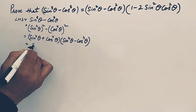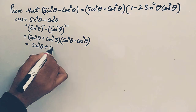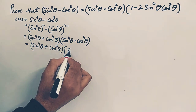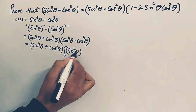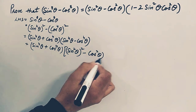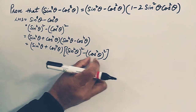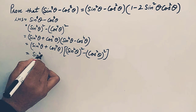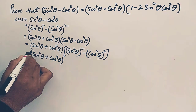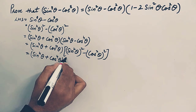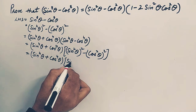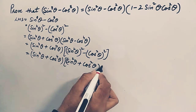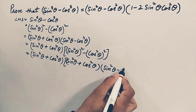The first factor stays as it is, but we can change the second factor. We apply the same formula again: sin⁴θ minus cos⁴θ is (sin²θ)² minus (cos²θ)², which is again a² minus b². So it becomes sin⁴θ plus cos⁴θ, into (sin²θ plus cos²θ)(sin²θ minus cos²θ).